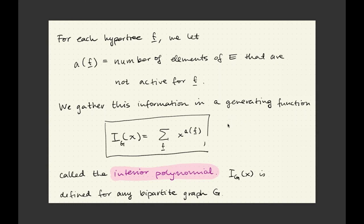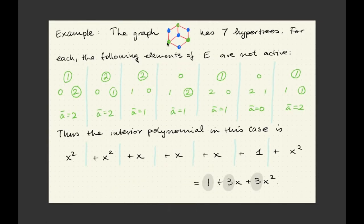And I just gather this information in a so-called generating function. I call this the interior polynomial associated to this graph G. Here is indeed an example. In what I use as a running example, it turns out you can construct seven hyper trees. This was the one I showed on the previous slide, and there are six others.